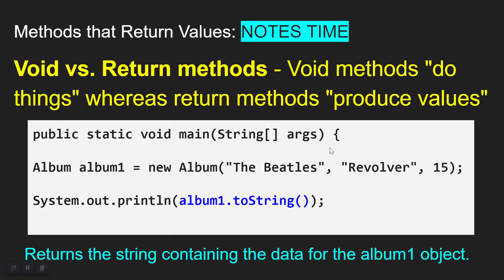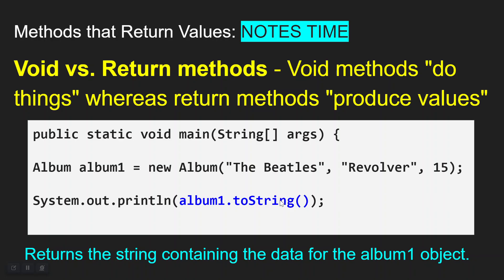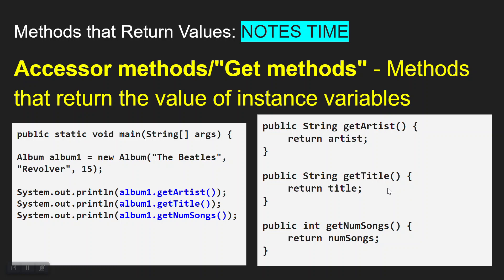Void methods do things, whereas return methods produce values. Here's an interesting example: I'm creating an object of the Album class, then calling the 'toString' method on the object 'album1'. But I need to put it inside a print statement, because 'toString' simply returns the string containing the data for the album1 object. If we want to actually see it printed to the console, it needs to be put inside a print statement.